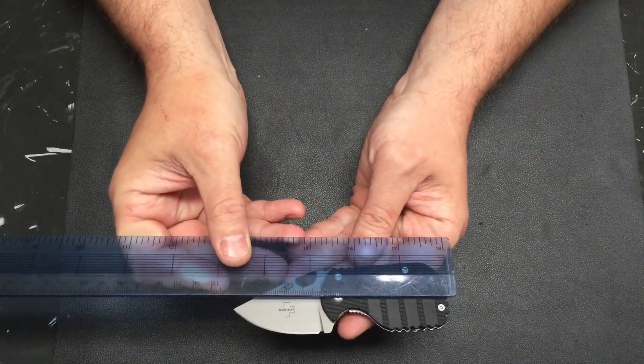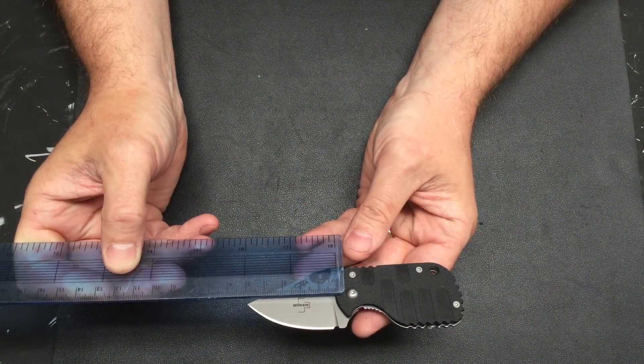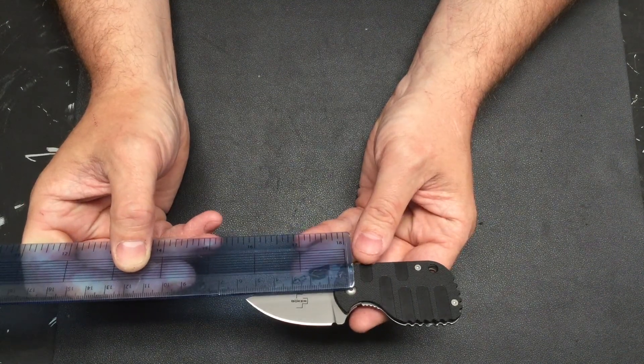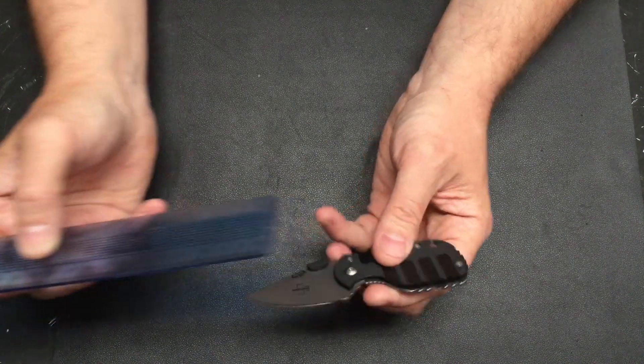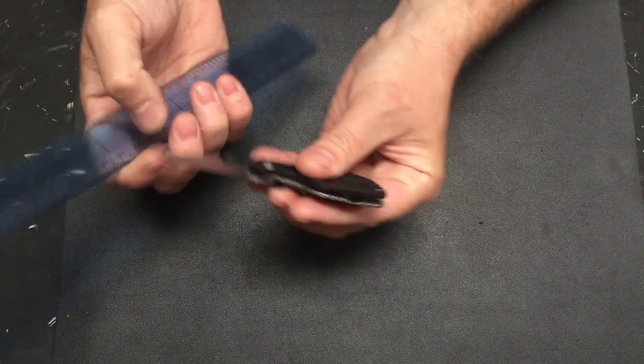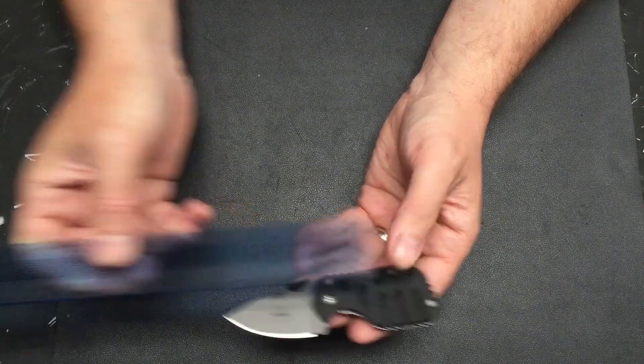Doing it this way, we're looking at a blade length of, if you take it from the pivot, just under six, about five and a half. Thickness of the D2, we got two mil. Overall before I close it up, just shy of 12.